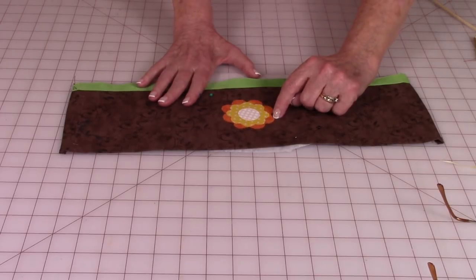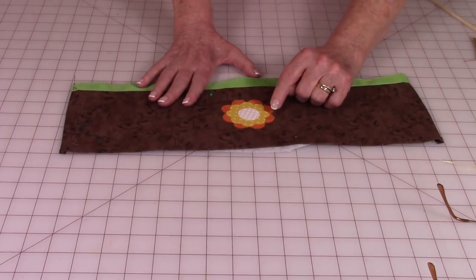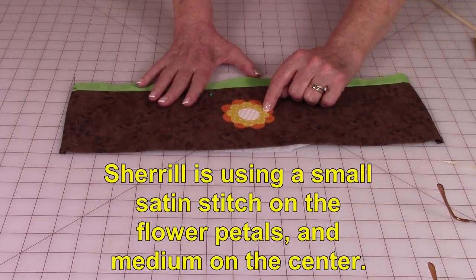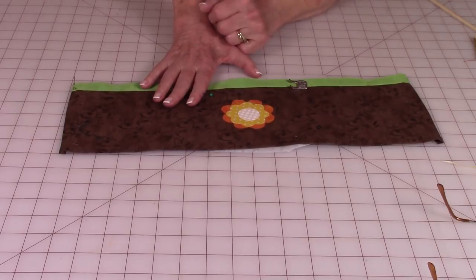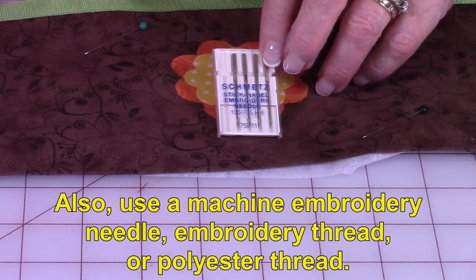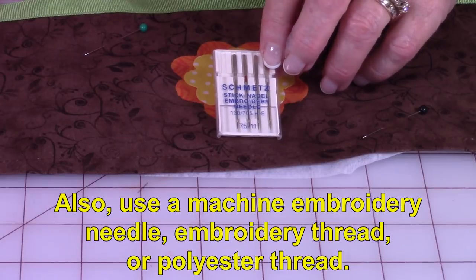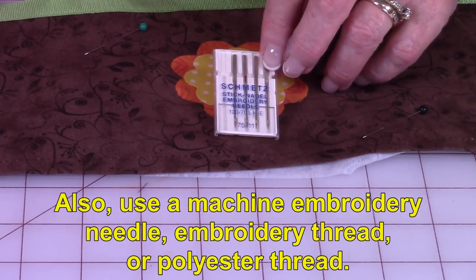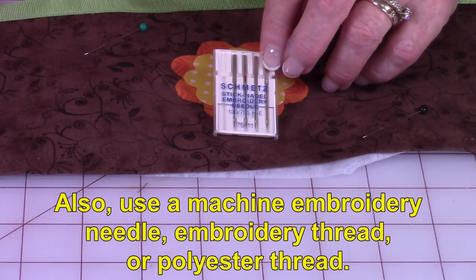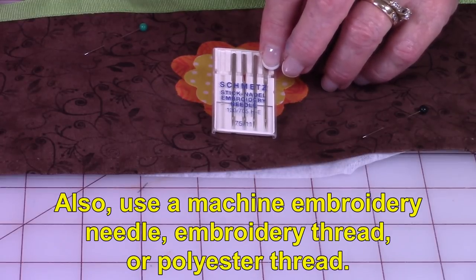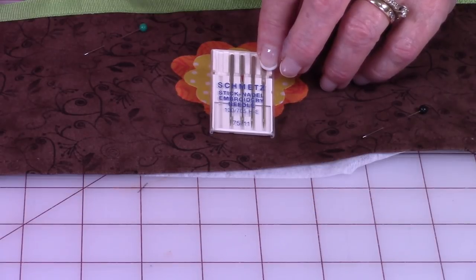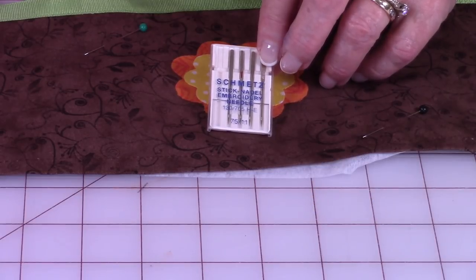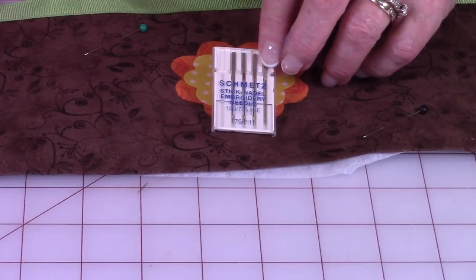So I'm going to use orange on the orange petals, yellow on the yellow petals, and I'm also going to use yellow on the white center. To make your stitching go a little easier for you, I also recommend you use a machine embroidery needle. It has a very sharp point on it and it will go through the fabric a lot easier. Again, it will make your stitching a lot easier.